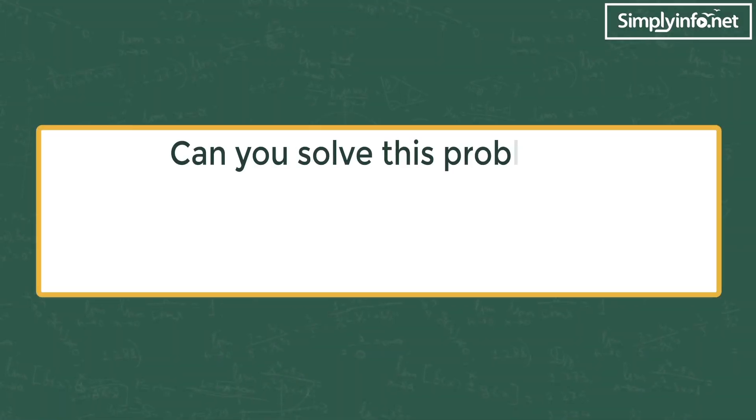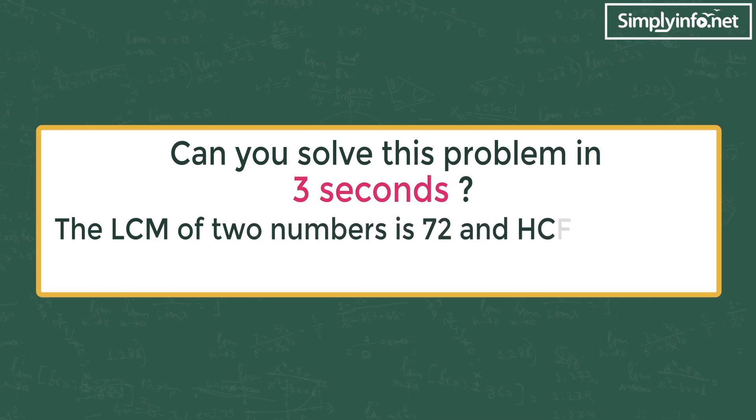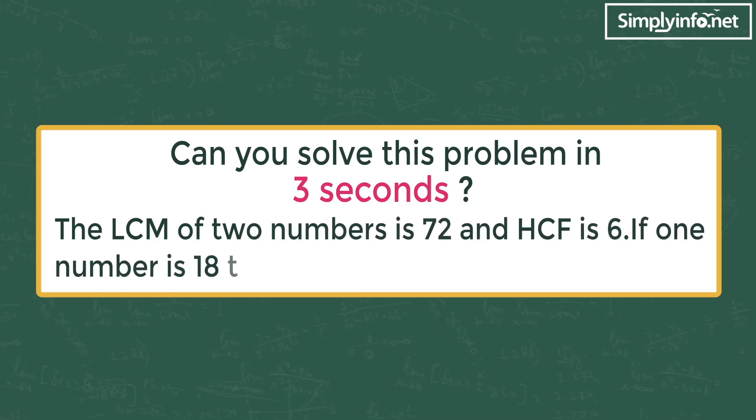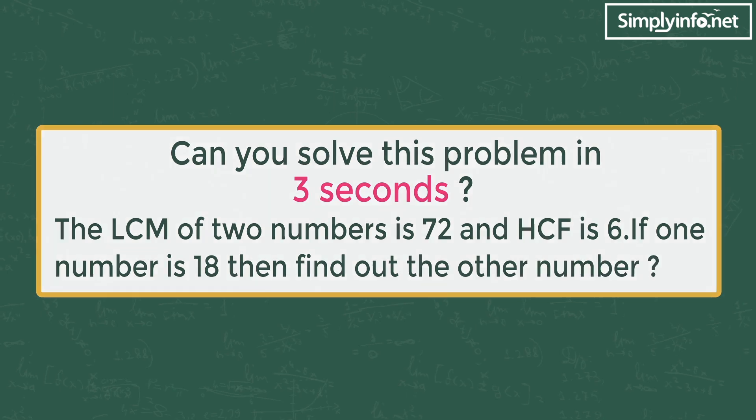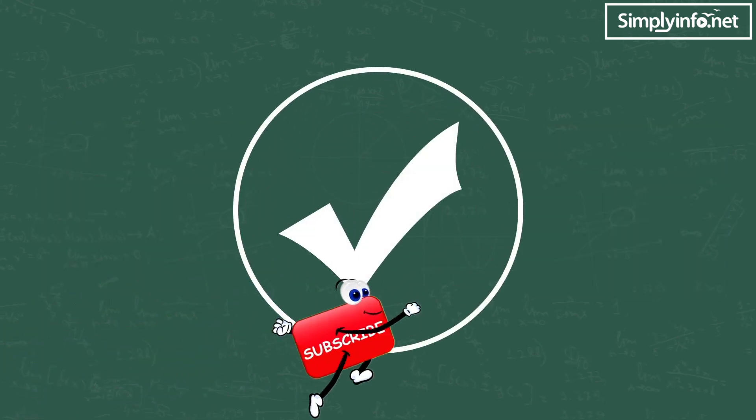Can you solve this problem in three seconds? The LCM of two numbers is 72 and HCF is 6. If one number is 18, then find the other number. Well, the answer is yes if you know this formula.